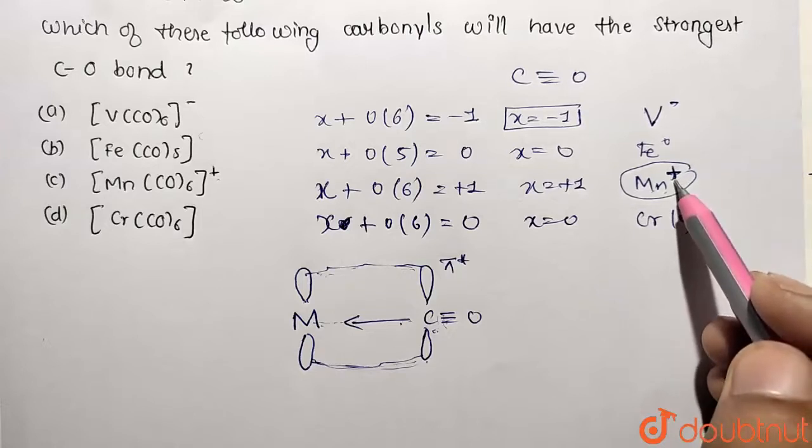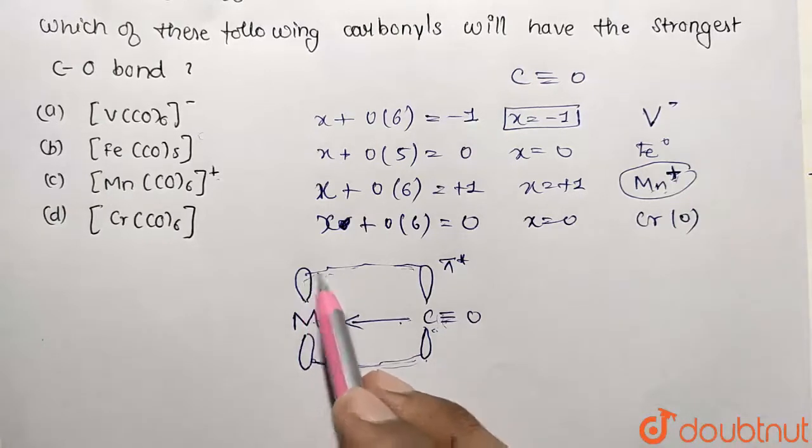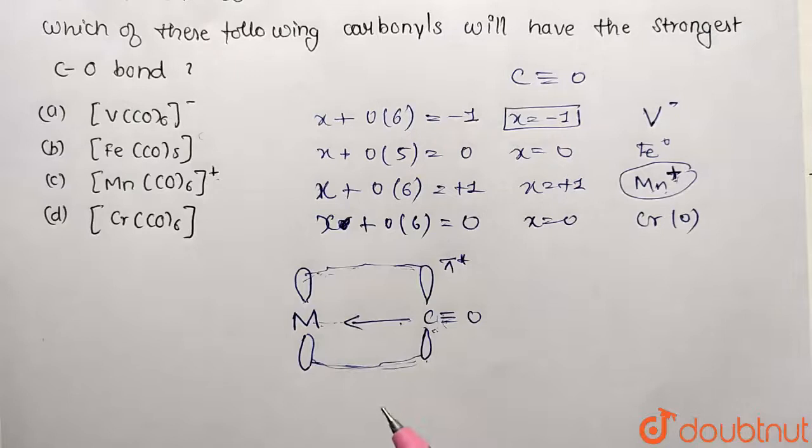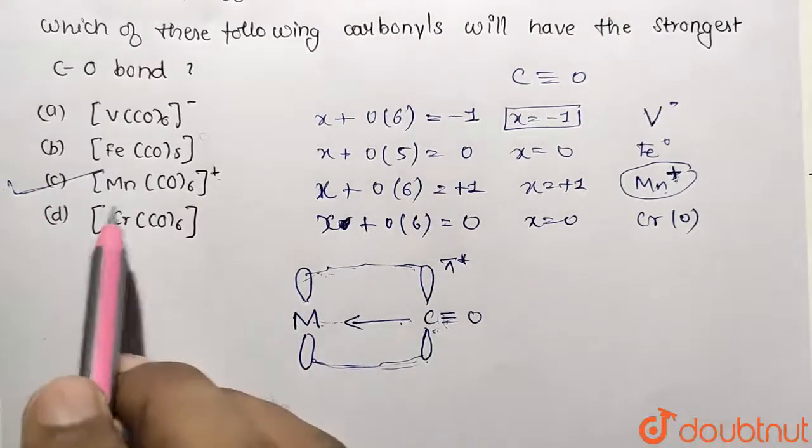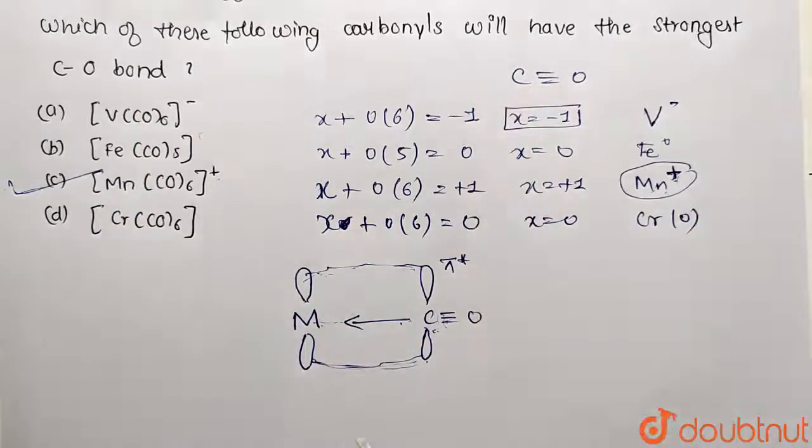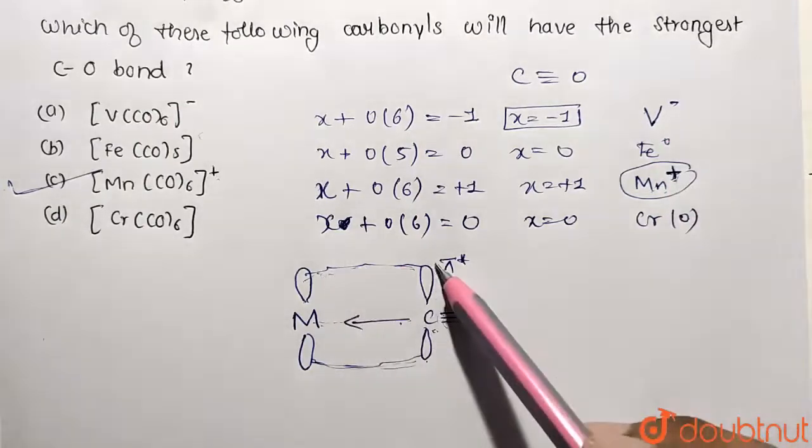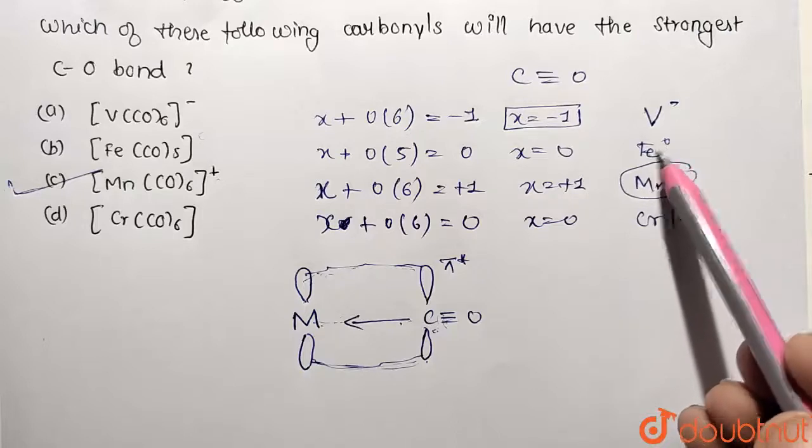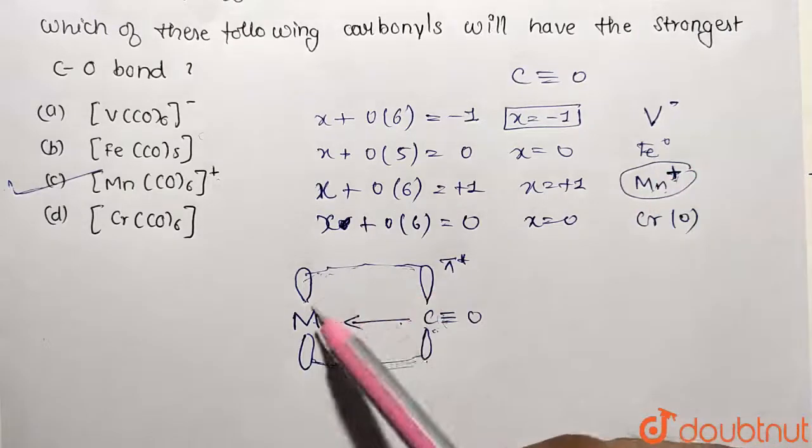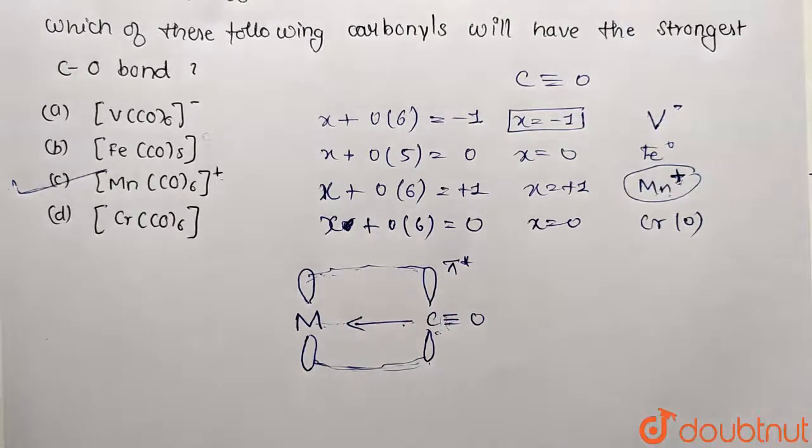Why? Because positive sign shows that it is going to have electrons not available. So if electrons are not available or less available, they are not going to do synergic bonding. So that's the very simple reason. So option C is the correct choice which is going to have least synergic bonding and strongest CO bond. While in other cases this negative charge is present, so it's going to easily show synergic bonding. In ground state also d electrons are freely available so they are going to undergo synergic bonding. Here also chromium will undergo synergic bonding. So this is the answer, option C correct.